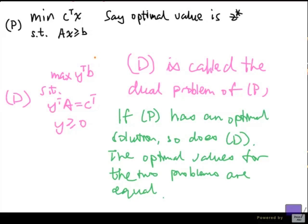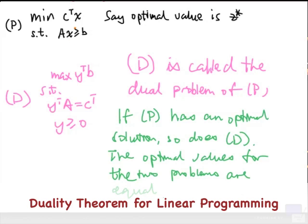In summary, what we have learned is, if p is a problem of this form, then we can write down a maximization problem of this form. The amazing fact is, if p has an optimal solution, then d also has an optimal solution. And the optimal values are the same. This is the duality theorem for linear programming.